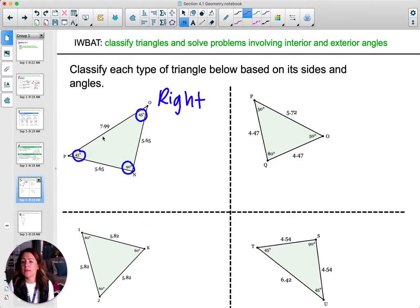Then we're going to look at the sides to see if any of the sides are the same. So we see 7.99, 5.65, and 5.65. So we end up with two sides that are congruent. So two sides that have the same measurement. So this makes it isosceles. So we have a right isosceles triangle.